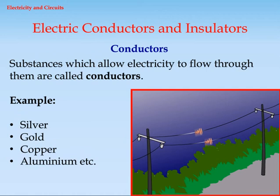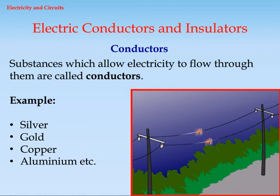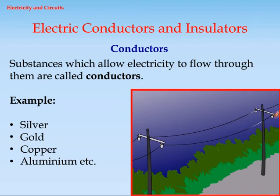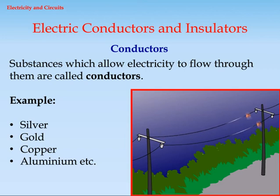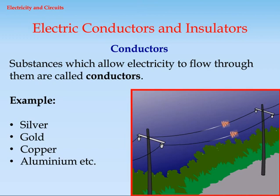Electric conductors and insulators. Conductors are substances which allow electricity to flow through them. Examples include silver, gold, copper, and aluminium.